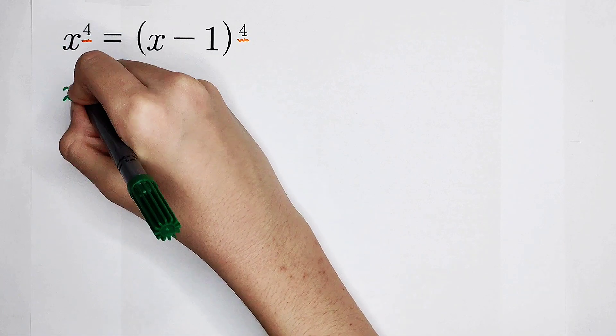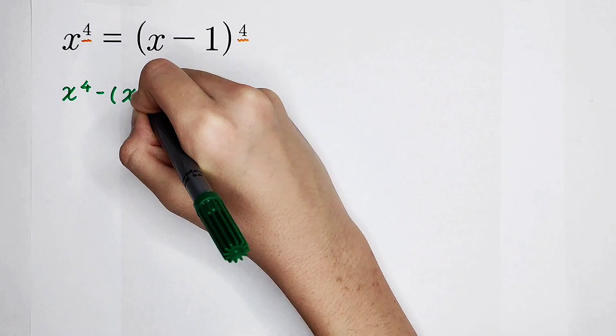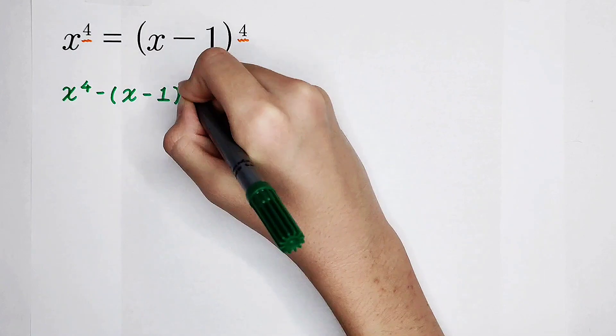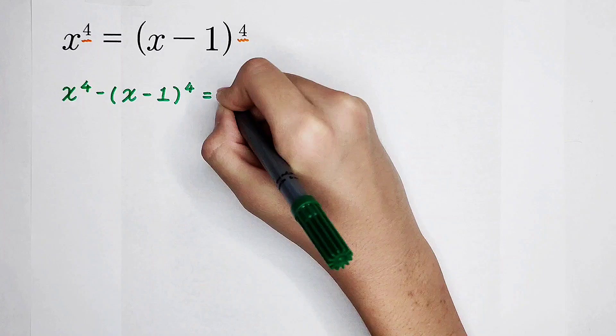So, x to the power of 4 minus x minus 1 to the power of 4 is equal to 0. Very good.